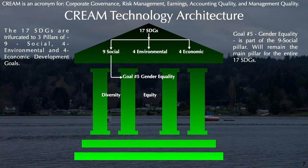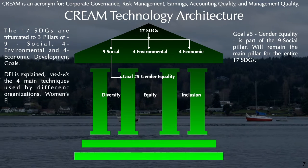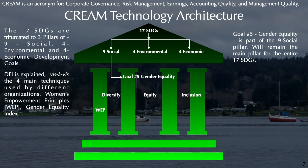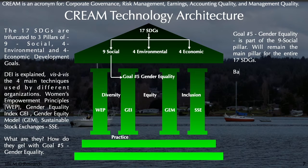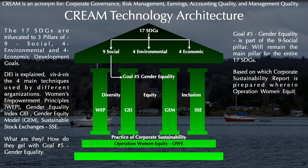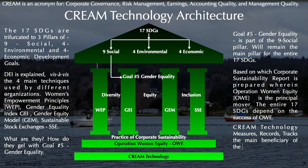DEI — Diversity, Equity, Inclusion — inclusion is a spine. The four main techniques used by different organizations are: Women's Empowerment Principles (WEP), Gender Equality Index (GEI), Gender Equity Model (GEM), and Sustainable Stock Exchanges (SSE). How do they gel with Goal 5 — gender equality? Based on this, the corporate sustainability report is prepared, wherein Operation Women Equity (OWE) is the principal mover. The entire 17 SDGs depend on the success of OWE. CREAM Technology measures, records, and tracks the main beneficiary of the 17 SDGs — the woman — every one of them, by women equity.